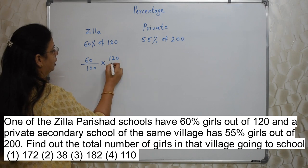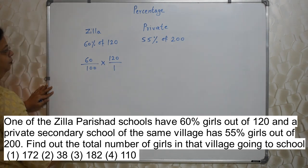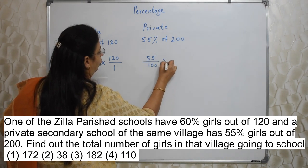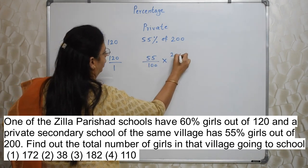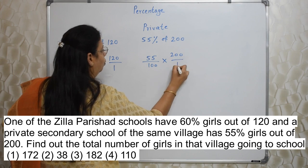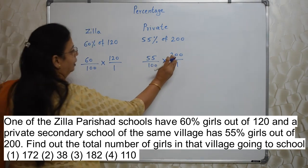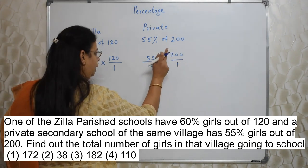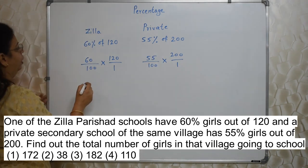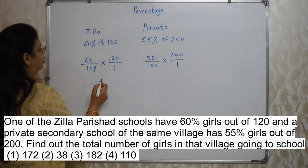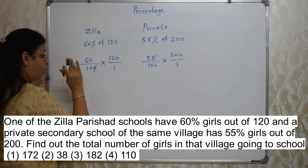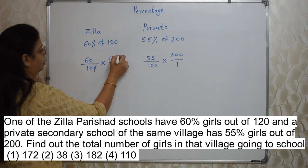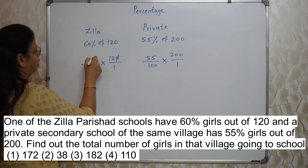If you get confused then write 1 in the denominator. Similarly here 55% of 200 upon 1. If you don't write this upon 1 it is okay — in case you get confused with the denominator then it's better to write it. First cancel the zeros — same number of zeros from the denominator and numerator.